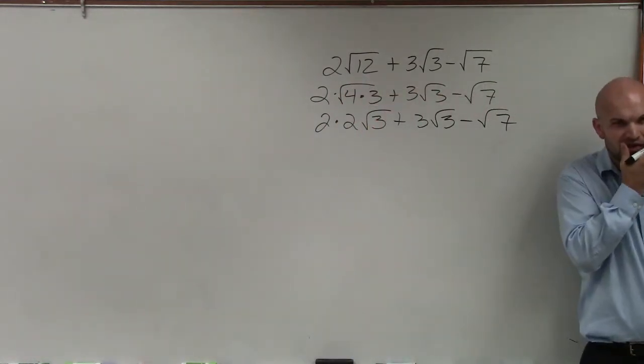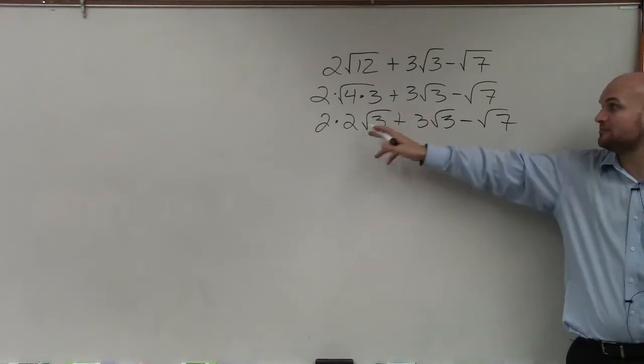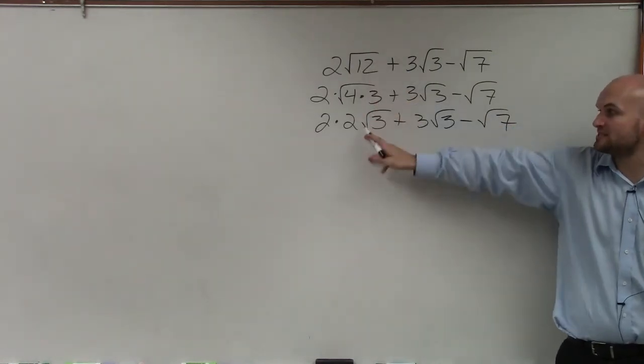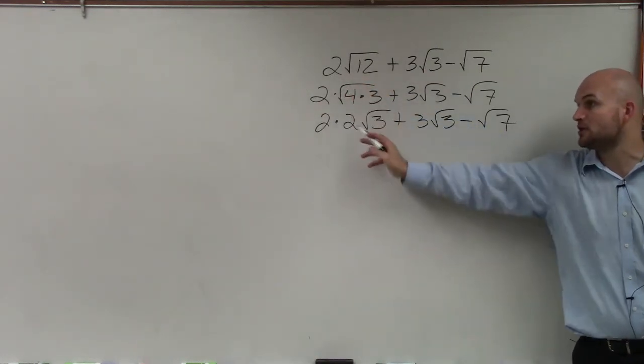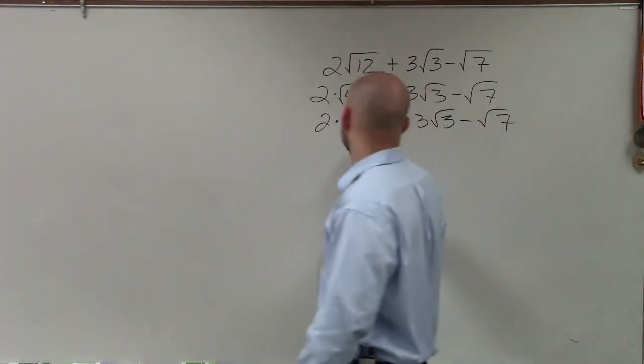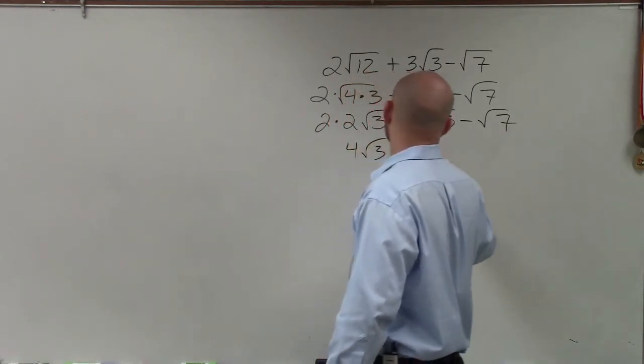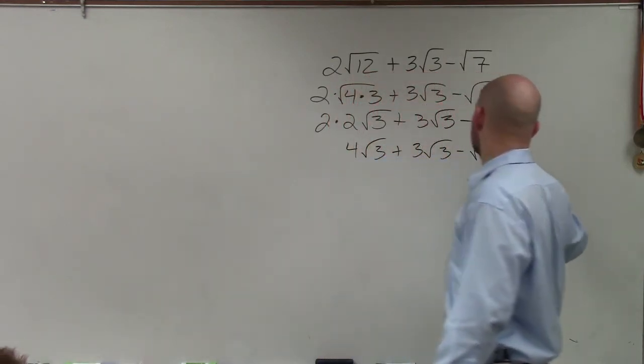Does everybody see what I did? So whenever you simplify this, the square root of 12 is simplified to 2 square root of 3. But I'm multiplying that square root by 2, so now I have to multiply these two numbers. So then I have 4 square root of 3 plus 3 square root of 3 minus square root of 7.